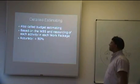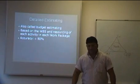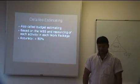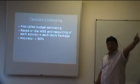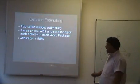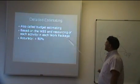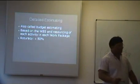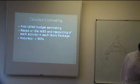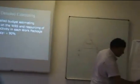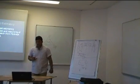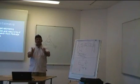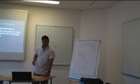If I go to detail estimating, let us just quickly look at what detail estimating says. The detail estimate is also called budget estimating. It is based on the WBS, which is the work breakdown structure, what we've done in the scope of work and scope management process, and resourcing of each activity in each work package. Remember what we said when we do detail estimating in terms of your work breakdown structure. As you go down in the work breakdown structure, the lowest level is the work package level. So the detail estimating is based on the WBS at work package level.